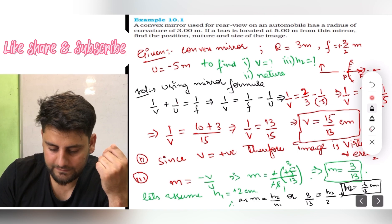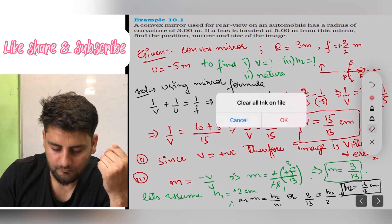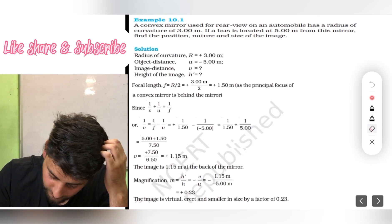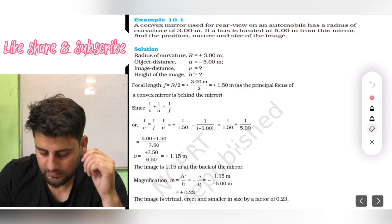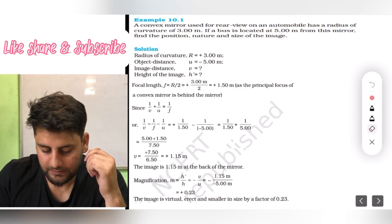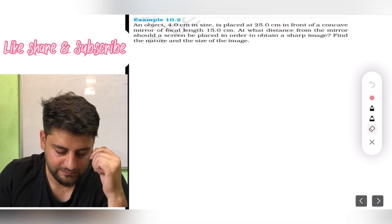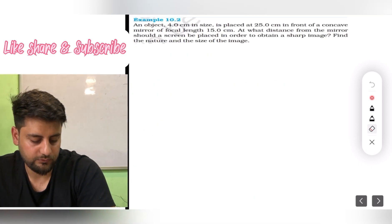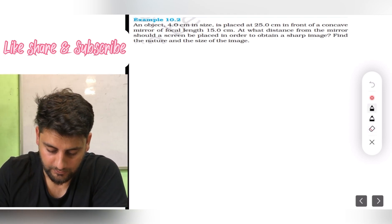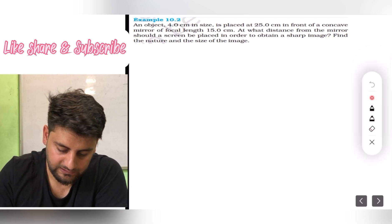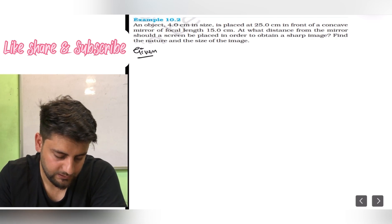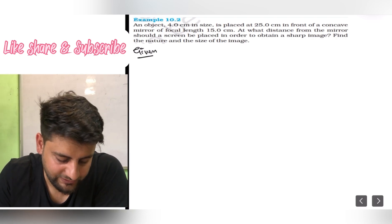Let's move forward now. Here, up to m everyone calculated, but after that your h2, even the book has not calculated. Now let's do the second question. That is, an object of 4 centimeter in size is placed at 25 centimeter in front of concave mirror. Let me write given first.